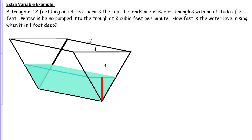Let's work through another related rates problem together. Here's the situation: a trough is 12 feet long and 4 feet across the top. Its ends are isosceles triangles with an altitude of 3 feet. Water is being pumped into the trough at 2 cubic feet per minute. How fast is the water level rising when it is 1 foot deep?